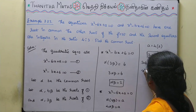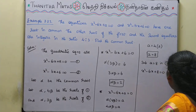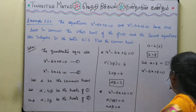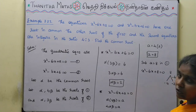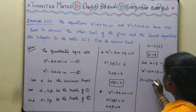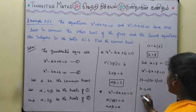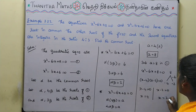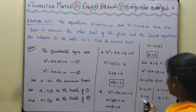Substituting a equals 8 into equation 1 gives x squared minus 6x plus 8 equals 0. Factorizing: we need two numbers that multiply to 8 and add to negative 6, which are minus 4 and minus 2. So we get x minus 4 times x minus 2 equals 0.